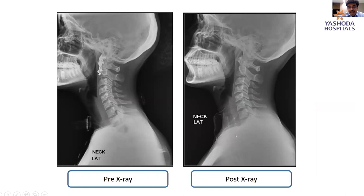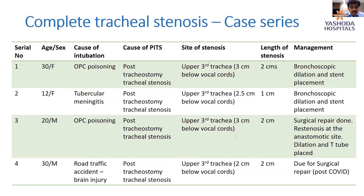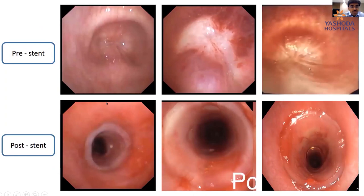We have had around four to five similar cases in the last two years — most involving prolonged ventilation, post-tracheostomy stenosis in the upper third of the trachea. Surgical option was offered to all. Two refused and underwent bronchoscopic dilation. One patient who underwent surgical resection had restenosis and required a Montgomery T-tube. The fourth patient is due for surgical repair post-COVID. Another case was a girl with TB meningitis who had a complete cutoff managed bronchoscopically.